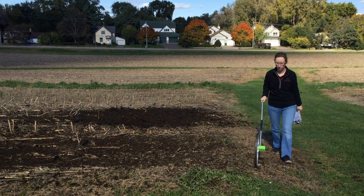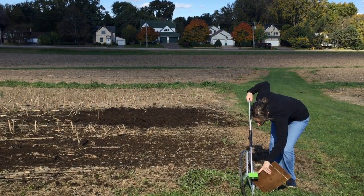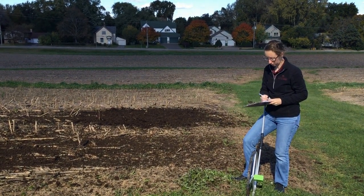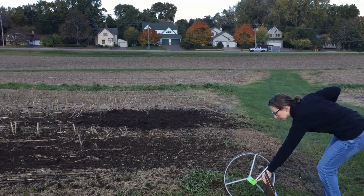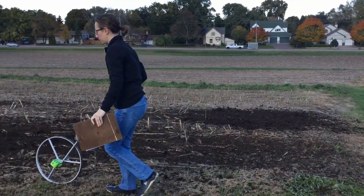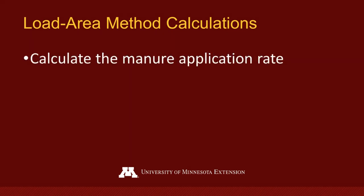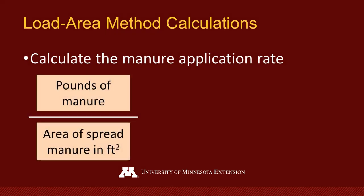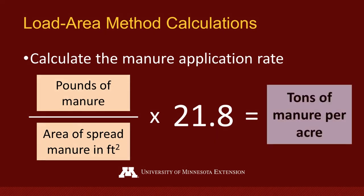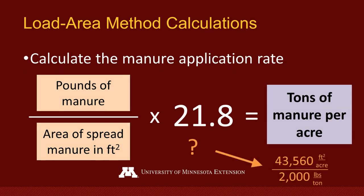Next, you'll need to measure the area over which the manure was spread. If the area is rectangular in shape, measure the length and width. Once you've recorded the length and the width in feet, multiply the two values to get the area in square feet. Finally, calculate the application rate. Divide the weight of the manure by the area over which it was spread, then multiply by a conversion factor of 21.8. This will give you the tons of manure spread per acre. Where does 21.8 come from? It is 43,560 square feet per acre divided by 2,000 pounds per ton. This will convert pounds per square foot to tons per acre.